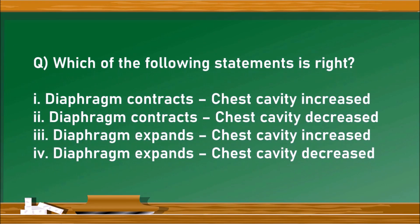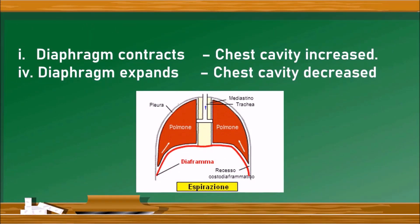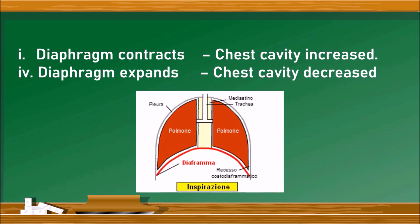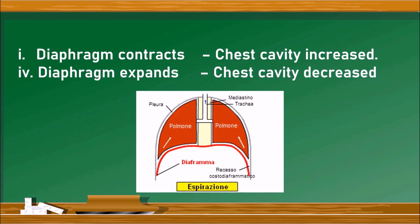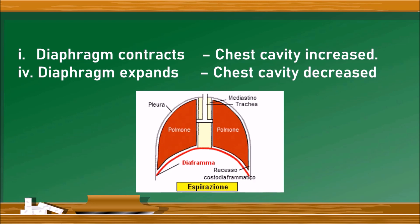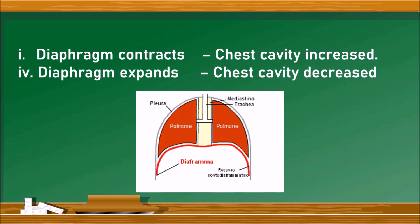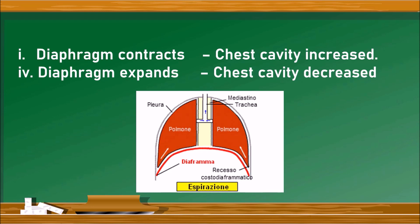Which of the following statements is right? The options are: diaphragm contracts → chest cavity increases; diaphragm contracts → chest cavity decreases; diaphragm expands → chest cavity increases; diaphragm expands → chest cavity decreases. A GIF is shown illustrating the movement. The correct answers are the first option (diaphragm contracts → chest cavity increases) and the fourth option (diaphragm expands → chest cavity decreases).